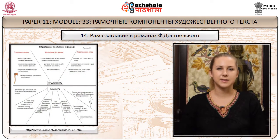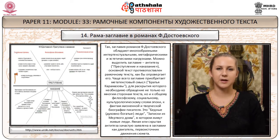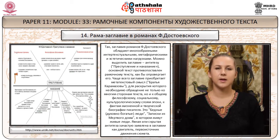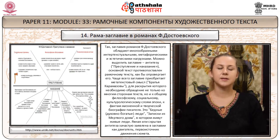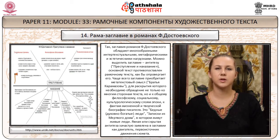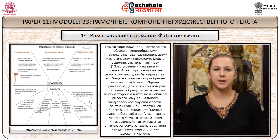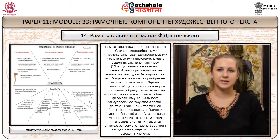Рама заглавия в романах Достоевского. Заглавия романов Достоевского обладают многообразными интертекстуальными, метафорическими и эстетическими нагрузками. Можно выделить заглавие-антитезу «Преступление и наказание»: основной текст как бы опровергает рамочный. Заглавие «Братья Карамазовы» приобретает метатекстовый смысл, для раскрытия которого необходимо обращение к философскому, социальному, культурологическому слоям эпохи, к фактам биографии писателя. Явная или скрытая антитеза зачастую заявлена в заглавии как двигатель, первоисточник движения сюжета.